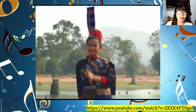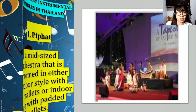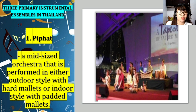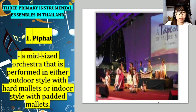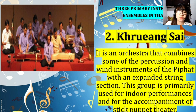So that is an example of traditional Thai music. Now let's talk about the musical instruments of Thailand. There are actually three primary instrumental ensembles. The first one is the Piphat — a mid-sized orchestra performed in either outdoor style with hard mallets or indoor style with padded mallets.